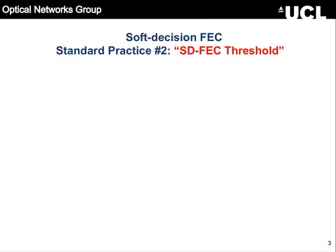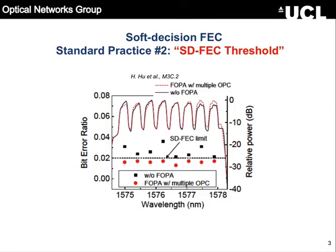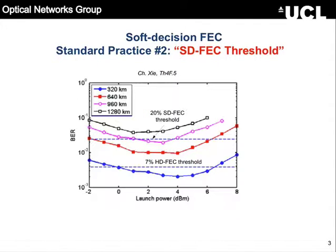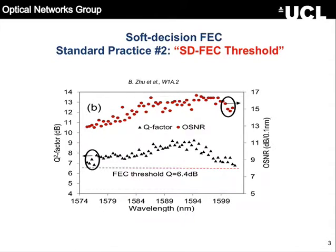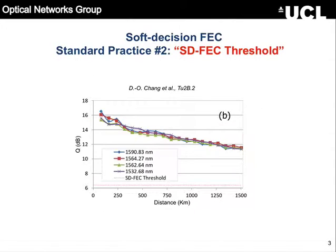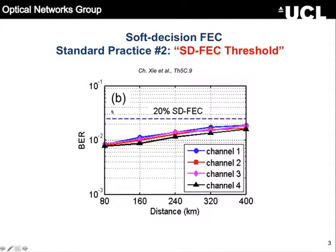There is a standard practice number two, which I call the SDFEC threshold. These are pictures from OFC last year, randomly taken — you see this horizontal line that is called the SDFEC threshold. For example, this last one: 20% SDFEC. This is standard practice. You go to the lab, you measure your pre-FEC BR, and you say if your pre-FEC BR is below this number, there is a soft decision FEC with 20% overhead that can correct this pre-FEC BR and bring it down to 10 to the minus 15, or whatever your post-BR target is. This is what is currently being done.